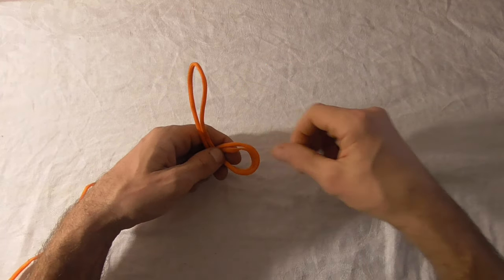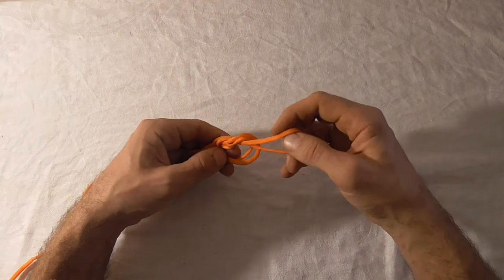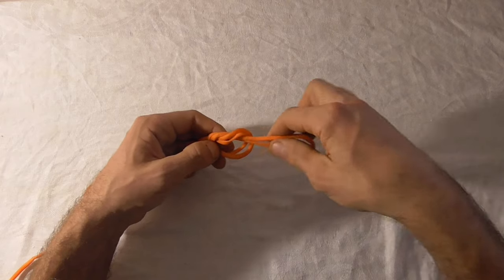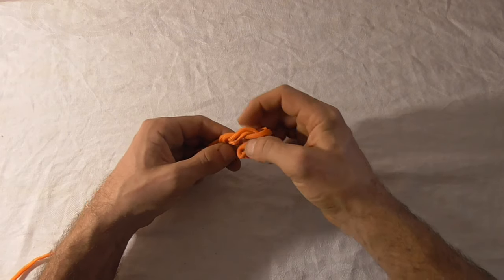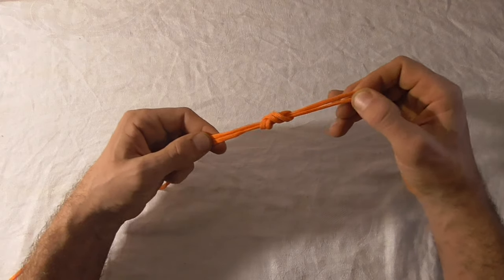We'll tuck it through as if we were tying an overhand knot, and then tuck it through one more time to do a double overhand and pull the whole thing tight.